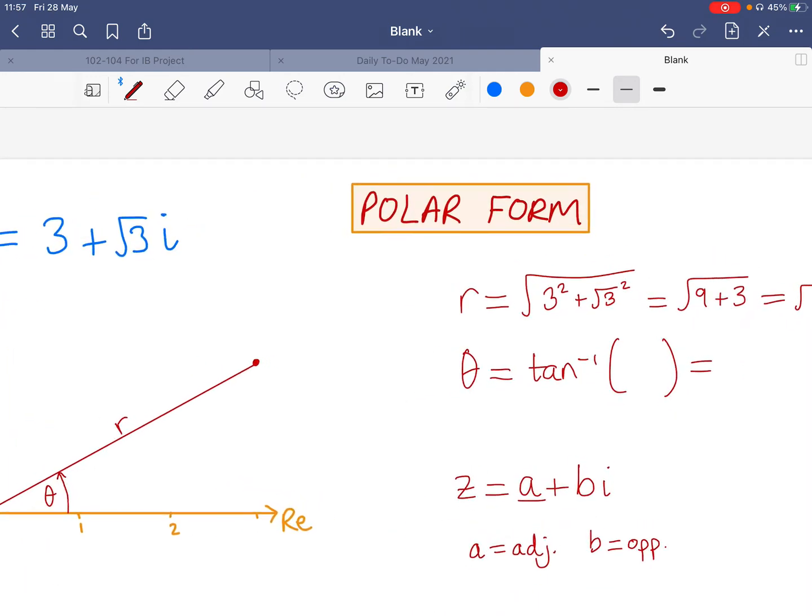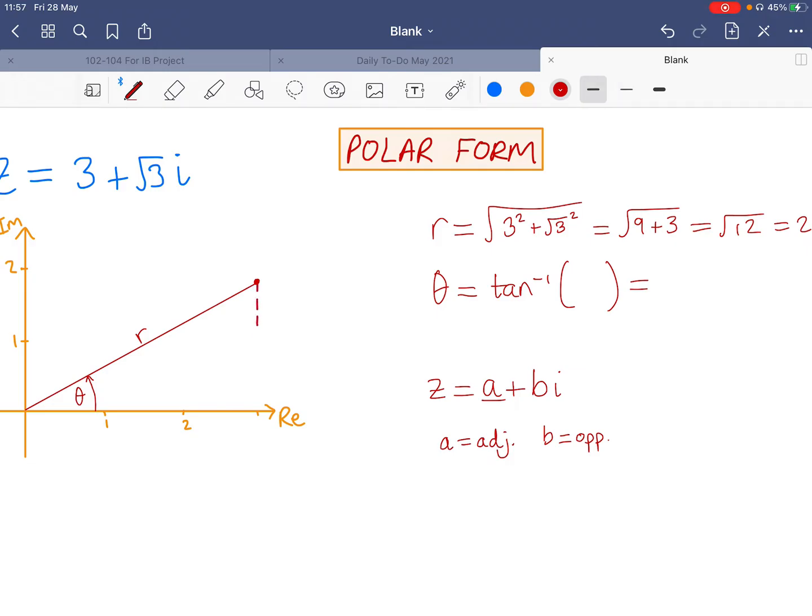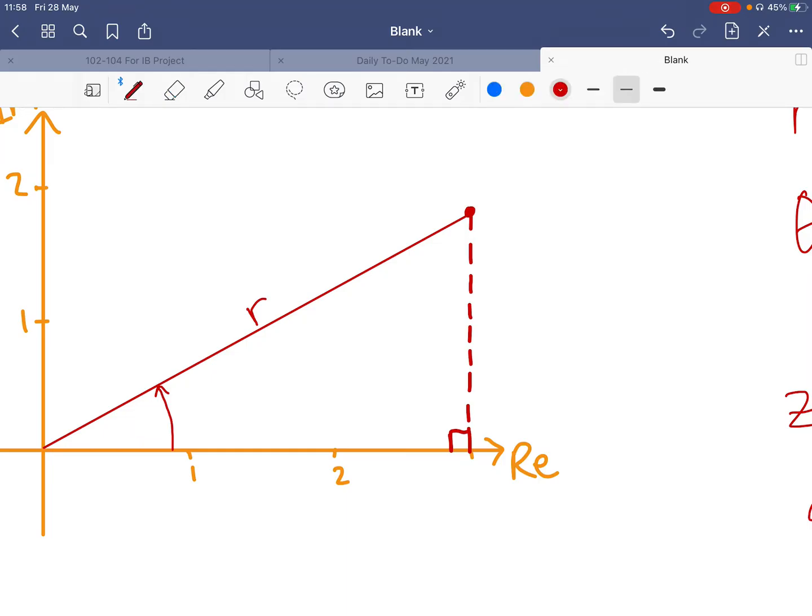For the argument, we can now consider a right-angled triangle. In that case, we have the opposite as root 3, the adjacent side as 3. And if you have opposite and adjacent, then that's going to be tan. So arc tan or inverse tan of root 3 over 3, and that's going to be pi over 6. So we have pi over 6 and 2 root 3 as our modulus.